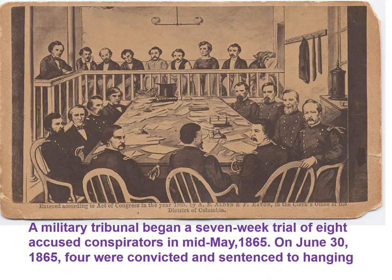The defendants, like Mary Surratt and others, claimed they didn't know about the assassination attempt. There was debate that they had been part of a Confederate Secret Service plan to kidnap Lincoln and exchange him for prisoners before the war ended, but they claimed they didn't know about the plan to kill Lincoln afterward. Mary Surratt said she was simply the owner of the boarding house where the plot was hatched. On June 30th, 1865, four were convicted and sentenced to hanging. Others, like Samuel Mudd, who always claimed his innocence and said he didn't know Booth had just killed Lincoln, were sentenced to prison.